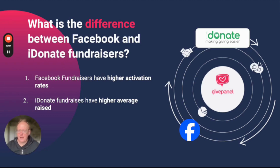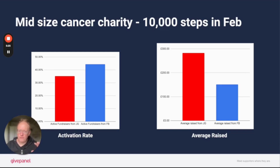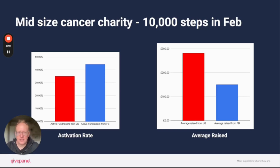Let me show what we've learned in the UK with our JustGiving integration, which is a proxy for the iDonate integration — done in exactly the same way with very similar expected results. This is a mid-sized cancer charity running 10,000 Steps in February, a classic Facebook challenge. The active fundraiser percentage from JustGiving was about 35%, whereas active fundraisers from Facebook was just shy of 45%. However, the average raised was almost double on JustGiving compared to Facebook, because people can share beyond Facebook — via WhatsApp, email — and donors don't need a Facebook account to donate.